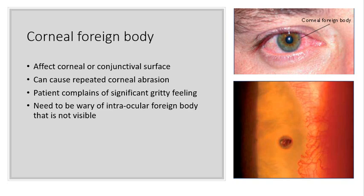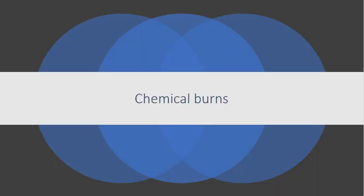Small foreign bodies like particles of steel or sand will affect the corneal or conjunctival surface. They can be washed along the tear film into the lacrimal drainage system, or they get stuck to the conjunctiva and cause scratches over the cornea each time the patient blinks — giving a repeated corneal abrasion. The patient will complain of a significant gritty feeling. When a patient presents with a corneal foreign body, you also need to be wary of any intraocular foreign body that may not be visible.